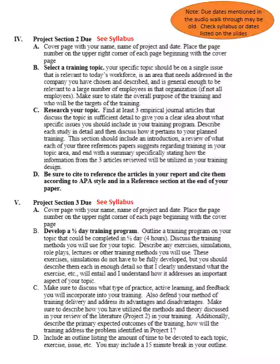Think of a problem affecting the organization on a fairly large scale — not something like one employee needing to be fired or needing individual training, but something at a more organizational level. The reason is that it's very hard to find research articles on impacting a single employee; most IO psychology research is focused at the organizational level. Find at least three articles that discuss the topic in sufficient detail to give you a clear idea of the specific issue and how to address it in training.